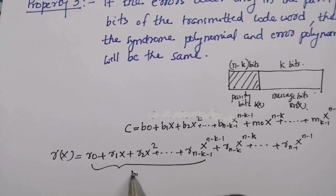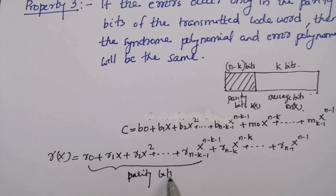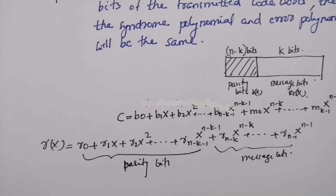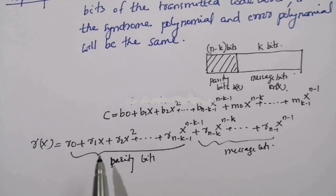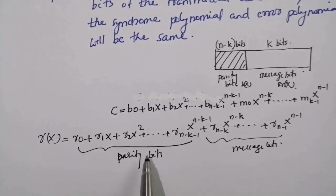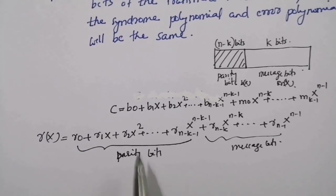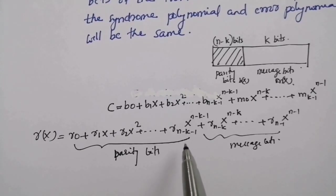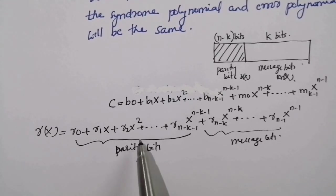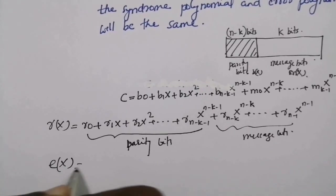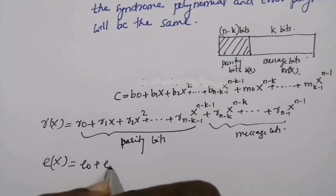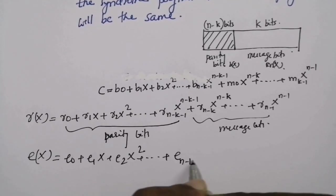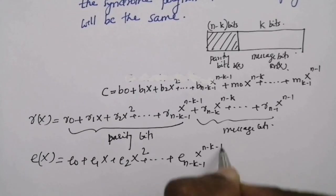These are the parity bits and these are the message bits. If errors occur in the parity bits, the error polynomial will be of degree n minus k minus one or less. So we can write e(x) equal to e₀ plus e₁x plus e₂x² plus etc. plus e_{n-k-1}·x^{n-k-1}. That is, the maximum degree of the error polynomial is n minus k minus one if errors occur in the parity bits.